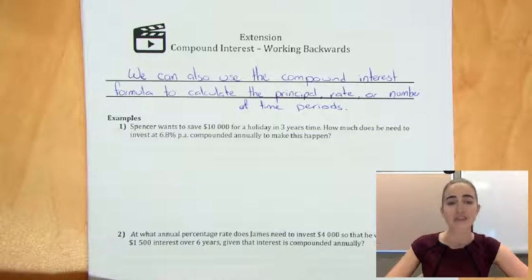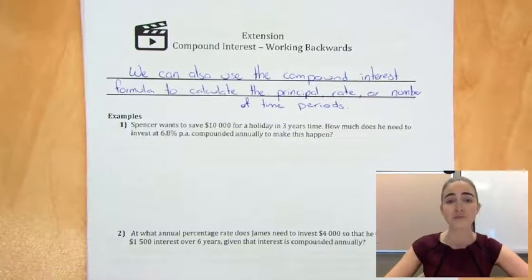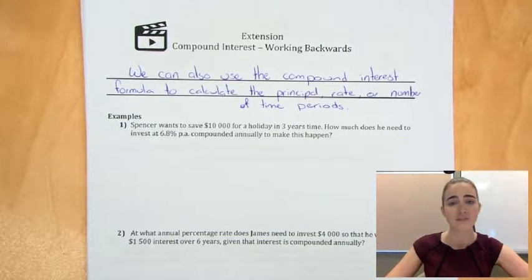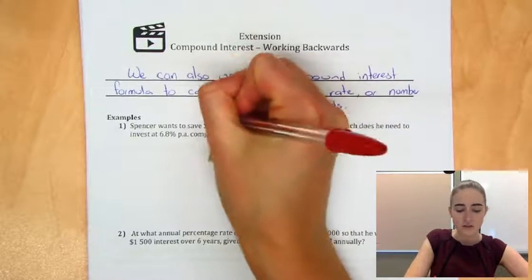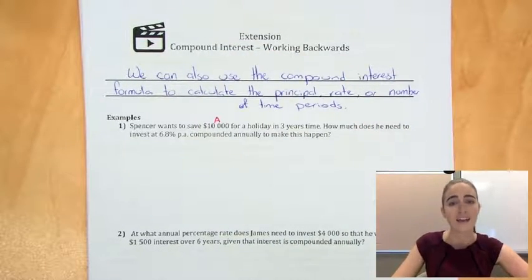Spencer wants to save $10,000 for a holiday in three years time. And we're asked how much he needs to invest at 6.8% per annum, compounded annually, to make this happen. So in this one, we don't know how much he's investing at the start. We don't know his principal. That's what we're going to try and find out. What we do know is the total amount that he wants at the end. So that $10,000 is our A in our formula.